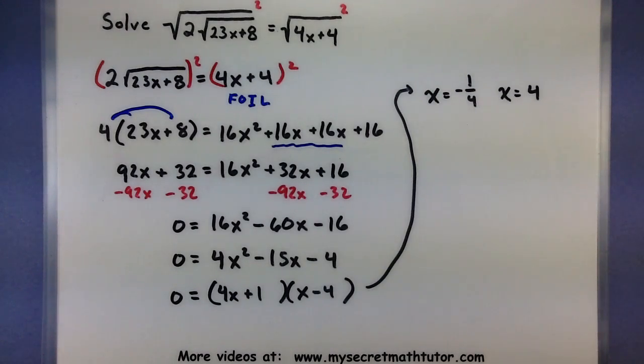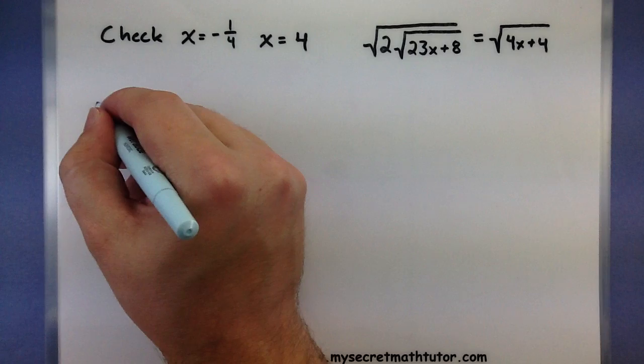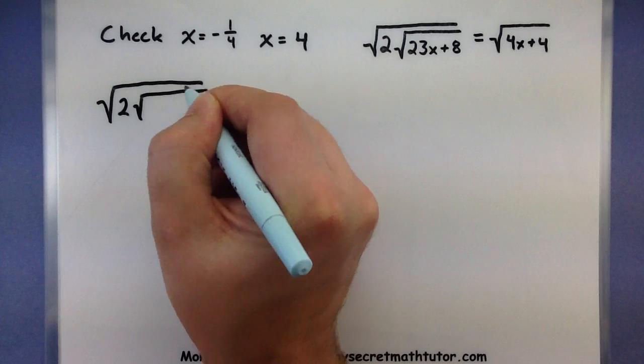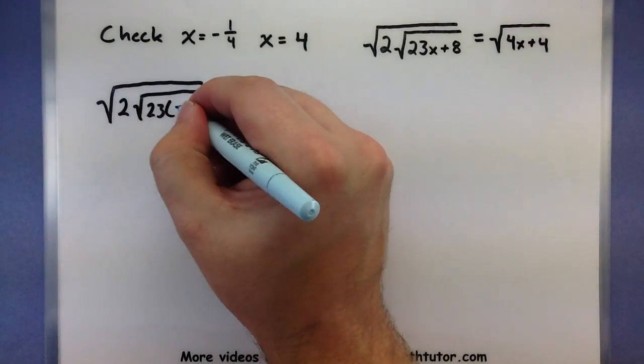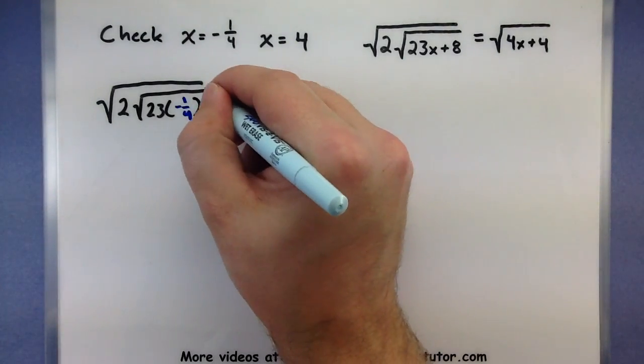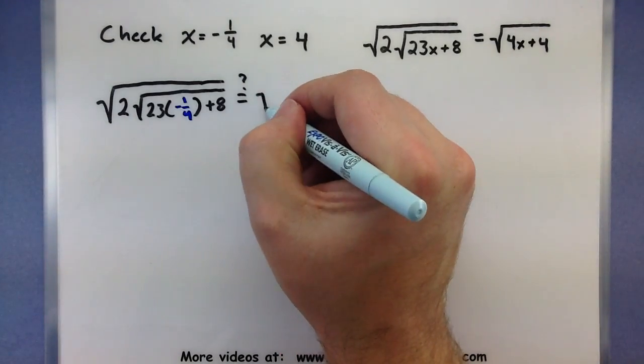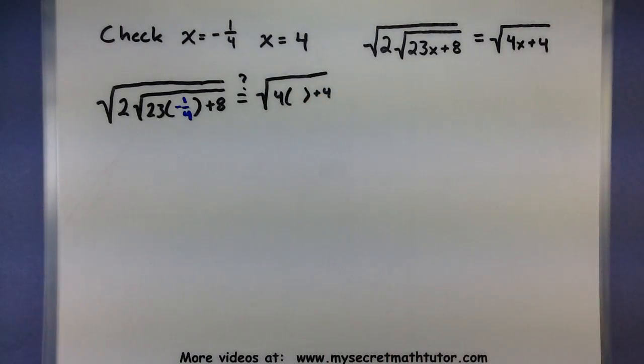So, let's go back to that original, now that we have these, and check them, see what happens. Remember, we must put these values in everywhere we see an x. Let's do this negative 1 fourth first. So, we'll have the square root of 2, square root of 23. Then, we'll go ahead and put in that negative 1 fourth, right there. Have a little plus 8. And we want to know, does this really equal the other side? 4, plus 4, and let's put in the negative 1 fourth over there.